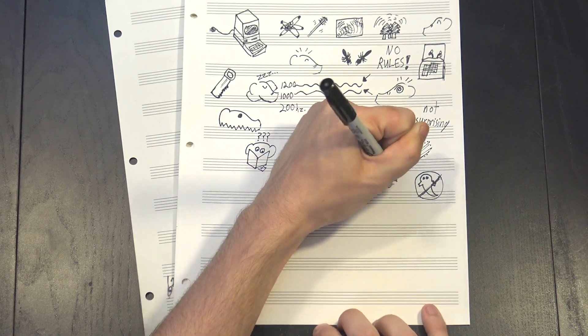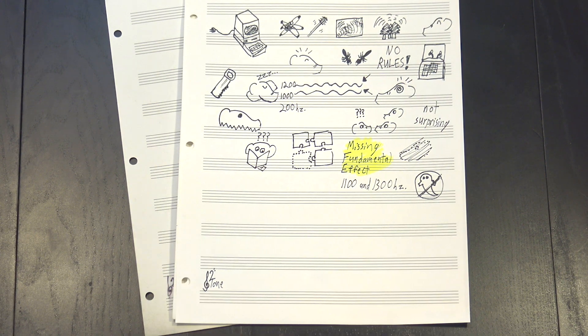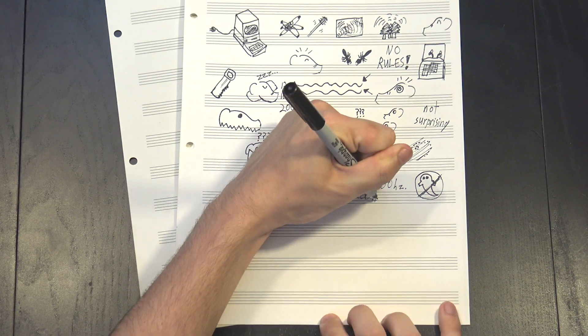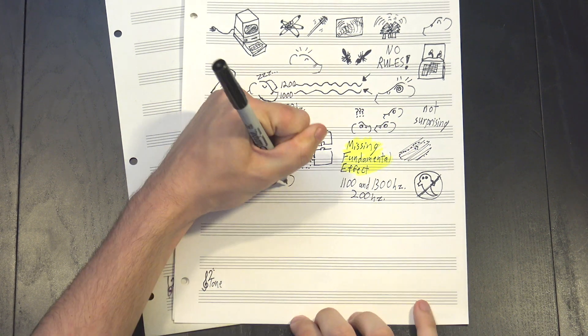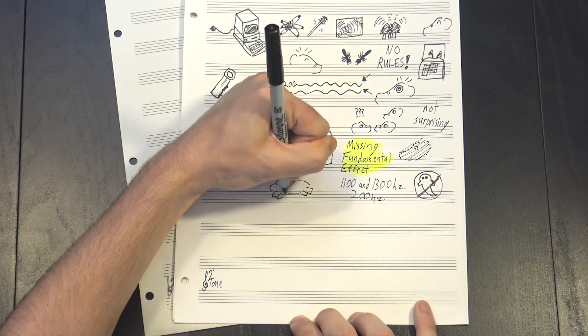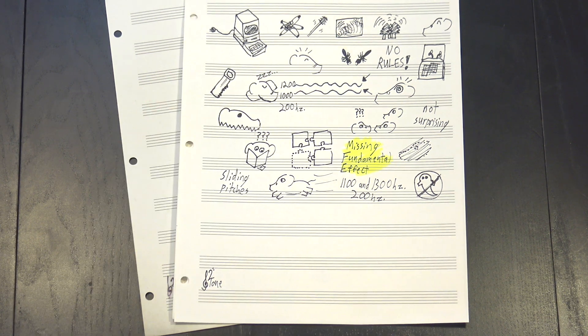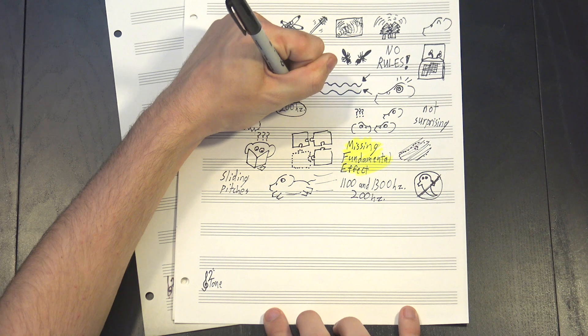For instance, here's 1100 and 1300 Hz, and we still hear that faint 200 underneath. In fact, we can hear the same effect even if the actual frequencies are moving. Here's two sliding pitches, but the difference between them will stay at exactly 200 Hz.